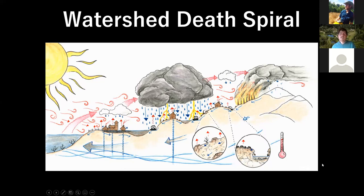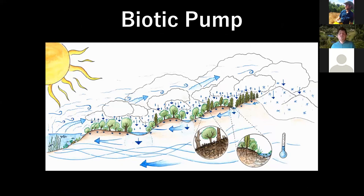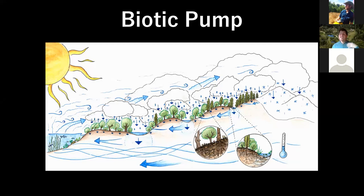This is a feedback loop that we can reverse. It's something that we can change, and when we do, we have all the forces of nature working with us. We start to re-trigger the biotic pump. The more water we put into the ground, the more vegetation naturally comes. The more vegetation that comes, the more humidity in the air and the more nucleates in the atmosphere, creating more rain, which feeds more vegetation, which feeds more rain. Life begets life. Once we start re-priming this biotic pump, it starts working with us to greater and greater effect.